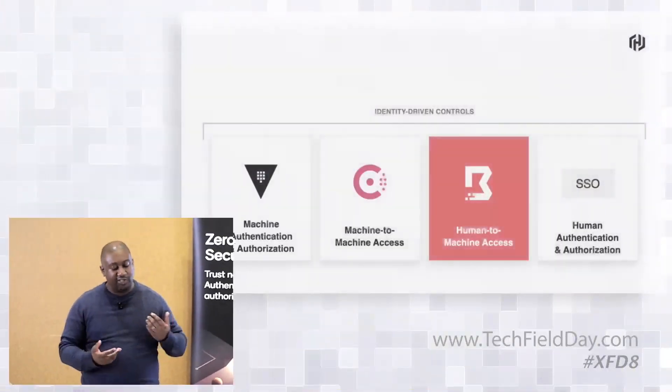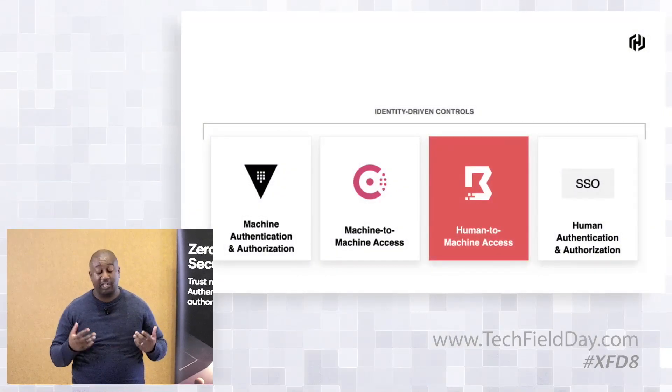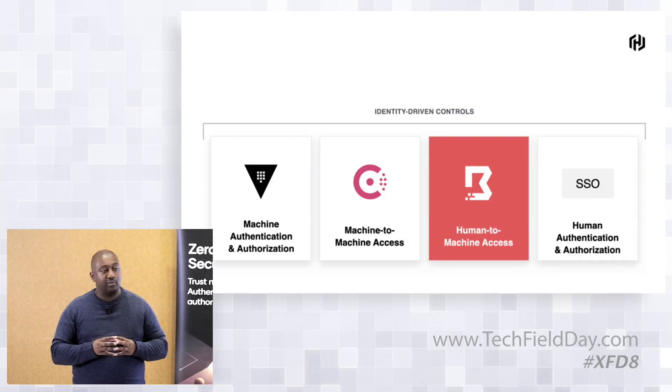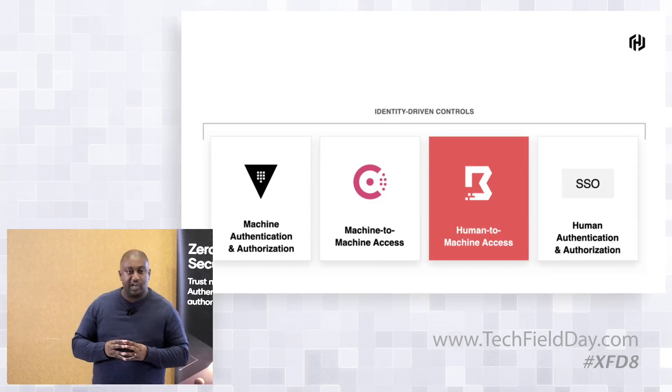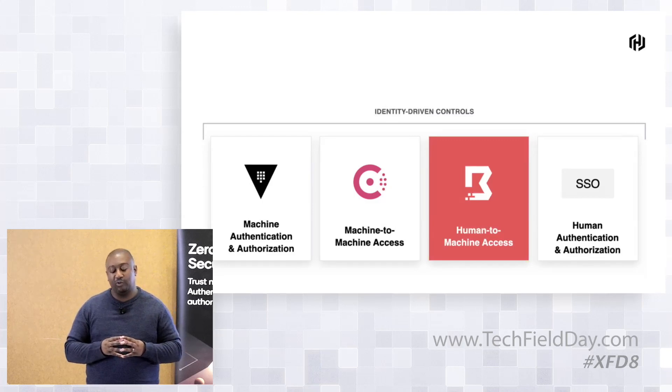I'm Rob Barnes, a senior developer advocate here at HashiCorp, primarily focused on the secure product line. In this series, we've covered machine authentication and authorization and the key role that Vault plays in that. We've just come off the back of speaking about machine-to-machine access and how we can control and govern which parts of our application stack are allowed to communicate with which other parts.